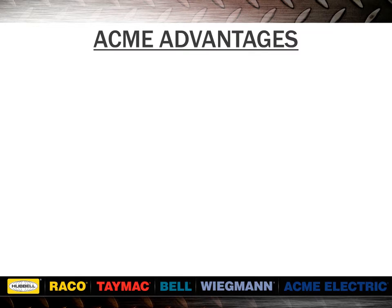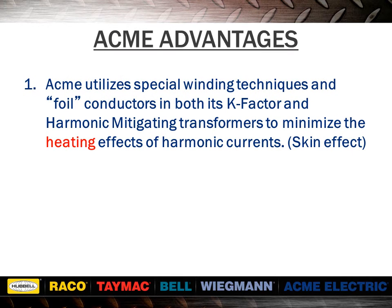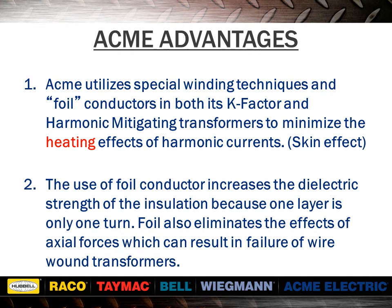Acme transformers have definitive advantages. Acme utilizes special winding techniques and foil conductors in both its k-factor and harmonic mitigating transformers to minimize the heating effects of harmonic currents. The use of foil conductor increases the dielectric strength of the insulation because one layer is only one turn. Foil also eliminates the effects of axial forces, which can result in failure of wire wound transformers.